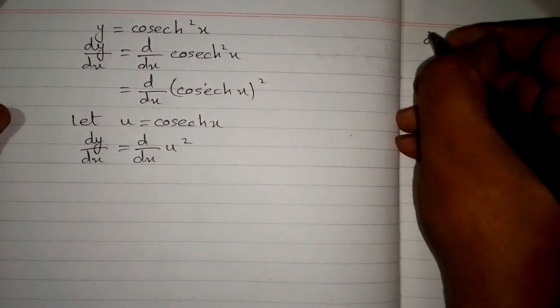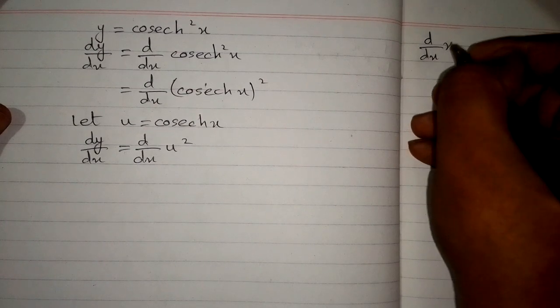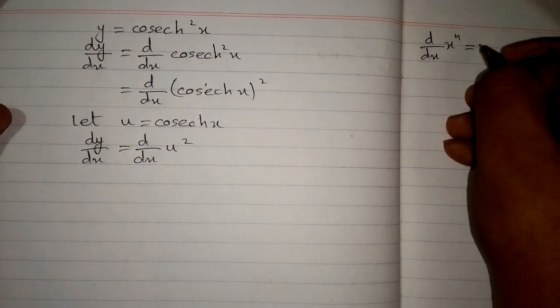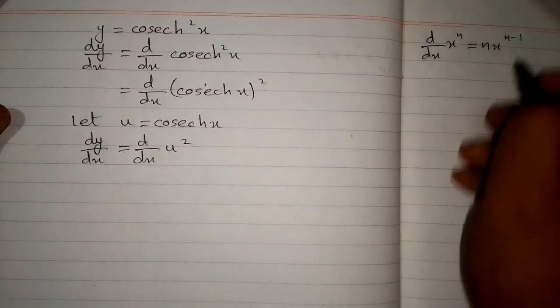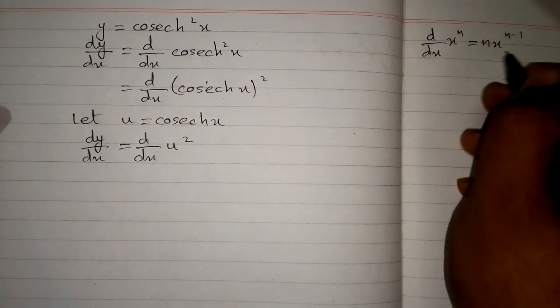Now we know that the derivative of x to the power n equals n times x to the power n minus 1. This is the power rule of differentiation.